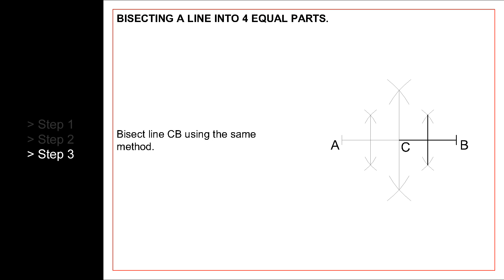Repeat the procedure on line CB, so it is also bisected into two parts. We have therefore bisected line AB into four equal parts: AD, DC, CE, and EB.